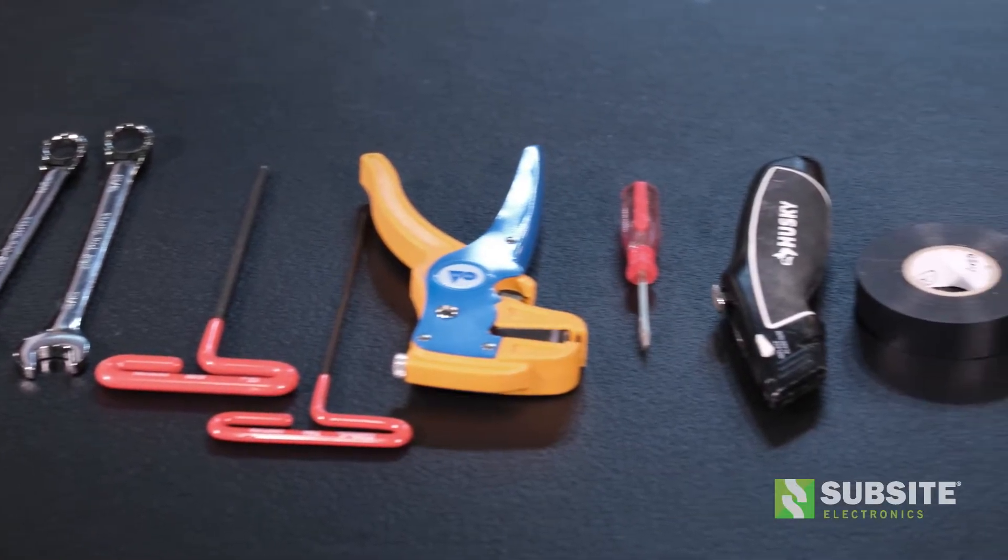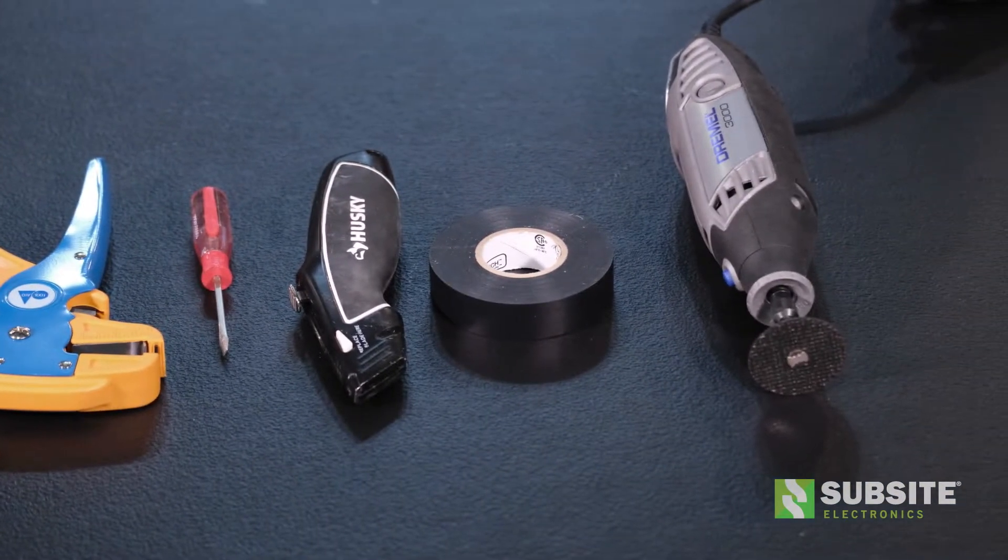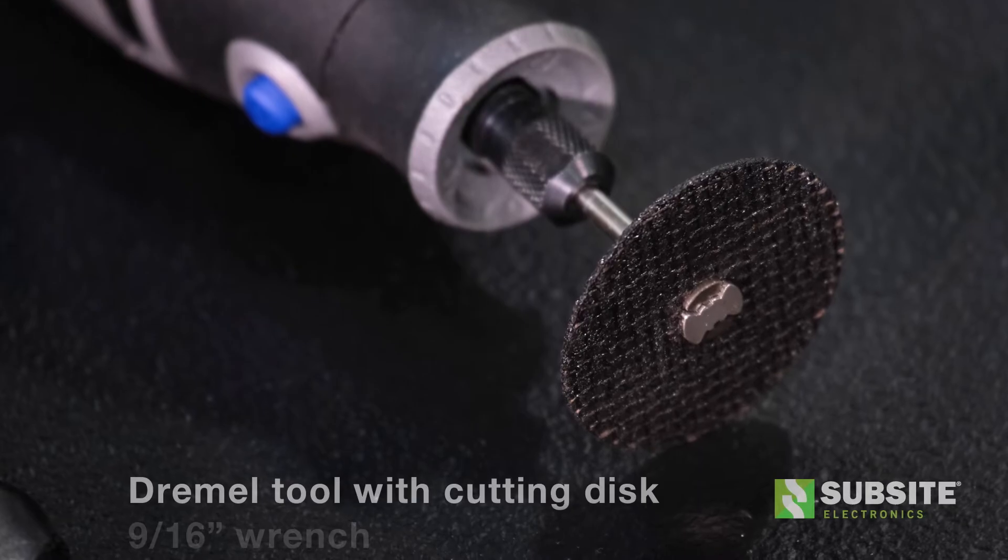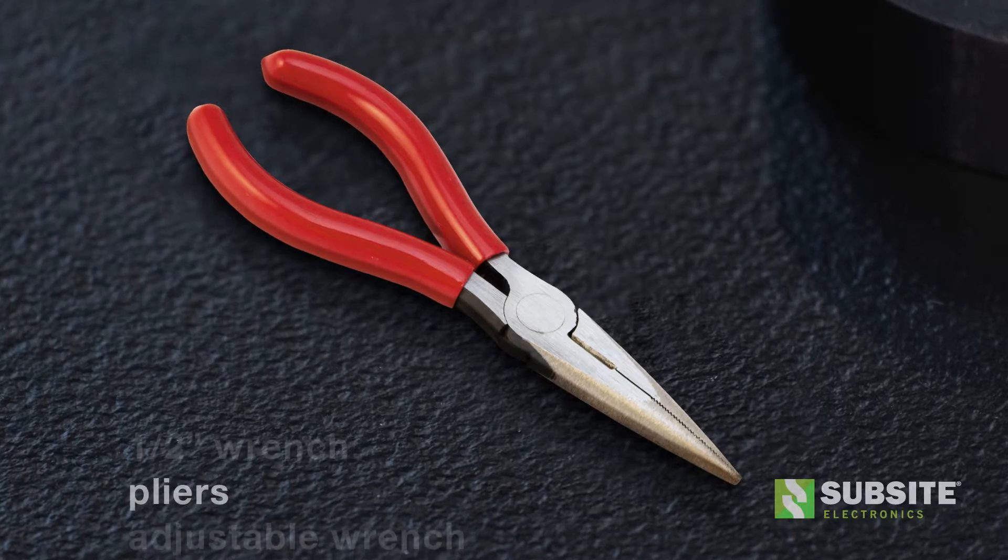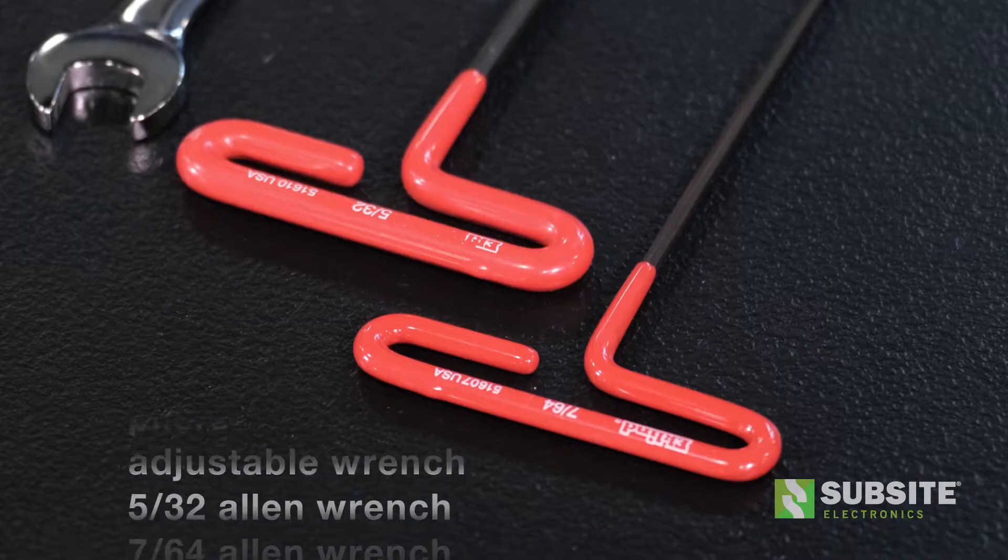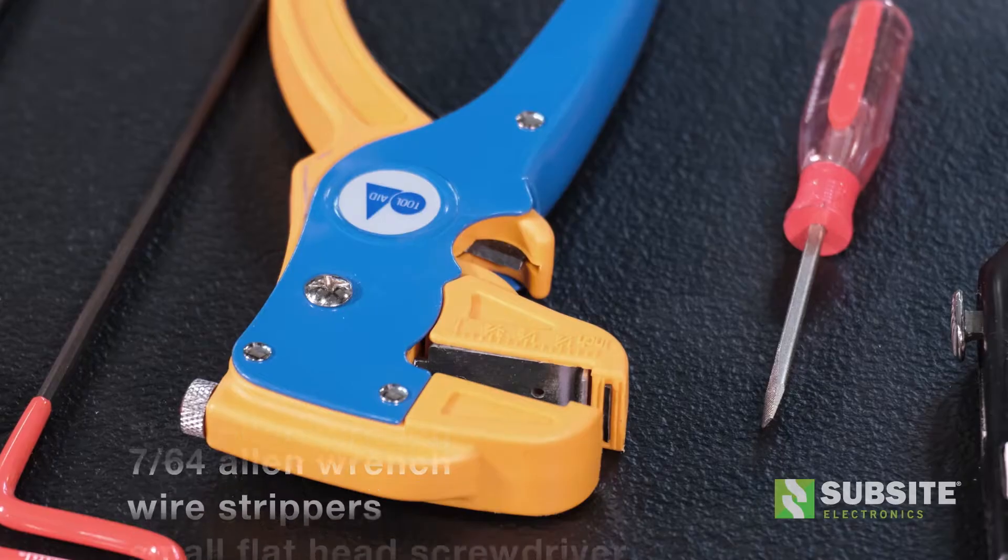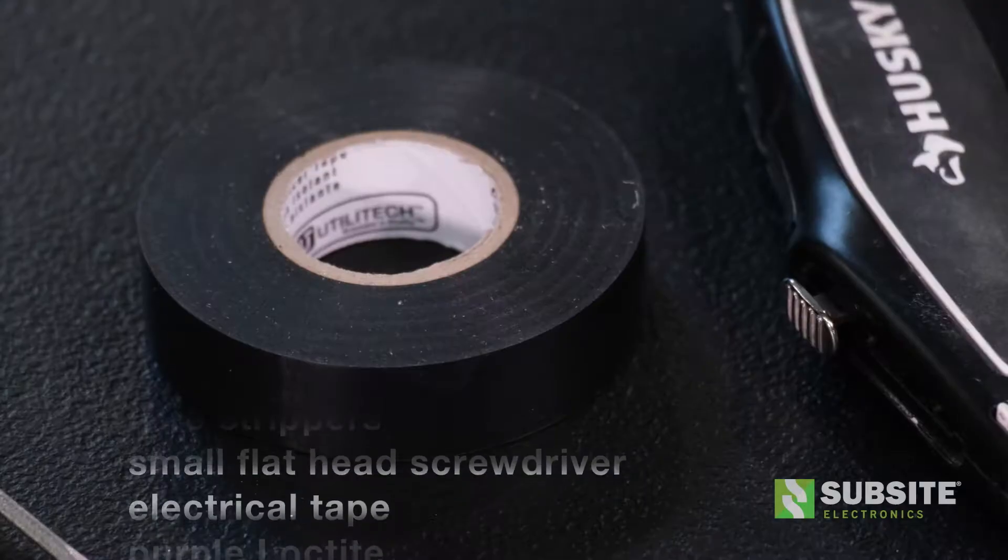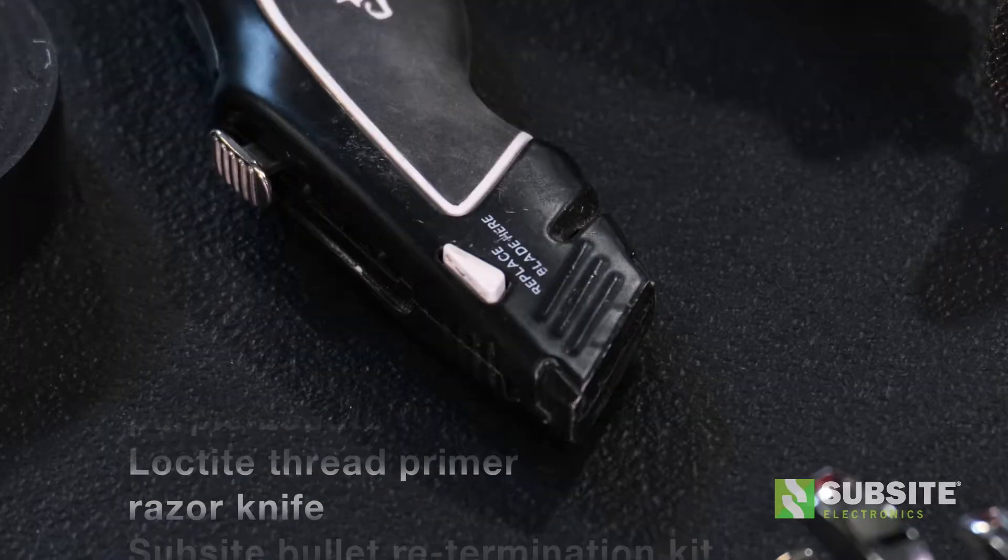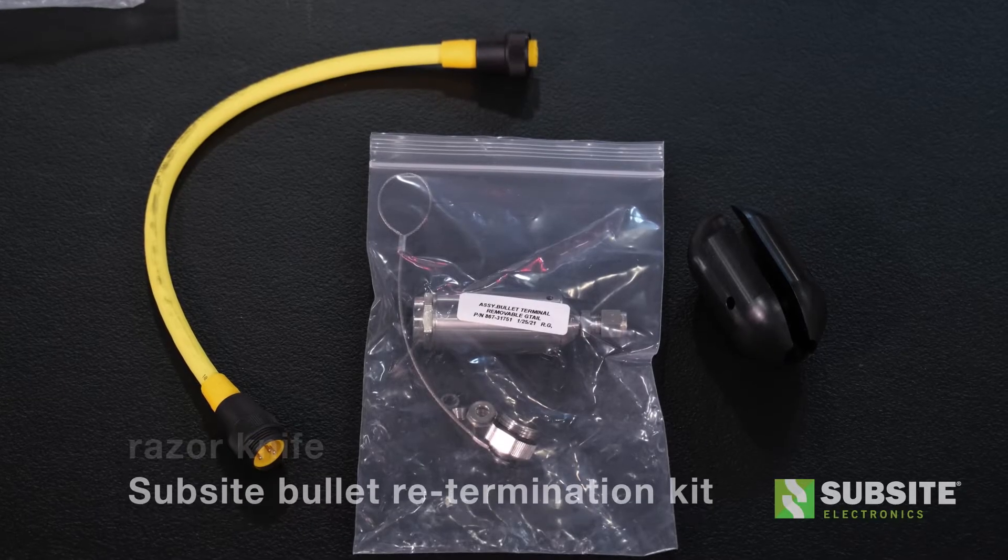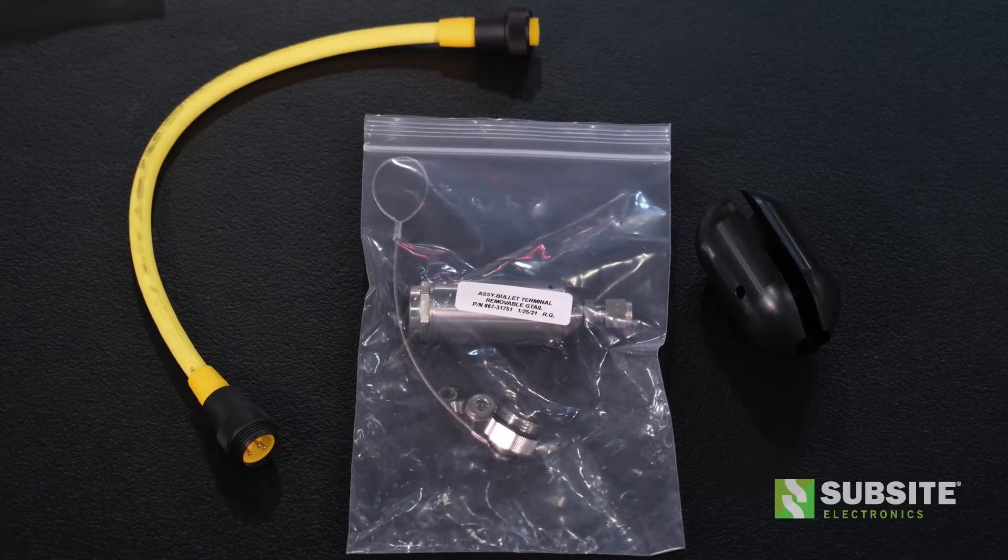Gather all the tools and accessories necessary to re-terminate the cable prior to beginning this process. These include a Dremel tool with cutting disc, 9/16 inch wrench, half inch wrench, pliers, adjustable wrench, 5/32nds Allen wrench, 7/64ths Allen wrench, wire strippers, a small flathead screwdriver, electrical tape, purple Loctite, Loctite thread primer, razor knife, and a Subsight bullet re-termination kit. Refer to your Subsight parts catalog for the part number.